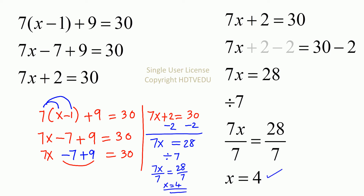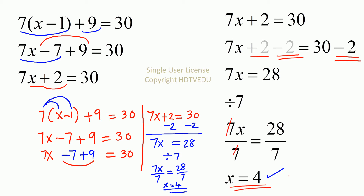So let's follow this again. 7 times x minus 1 plus 9 is equal to 30. Use the distributive property: 7x minus 7 plus 9 is positive 2, so 7x plus 2 is equal to 30. Subtract 2 from both sides and we get 7x equals 28. Divide both sides by 7 — 7 and 7 cancel out, 28 divided by 7 is 4. So we get x equals 4.